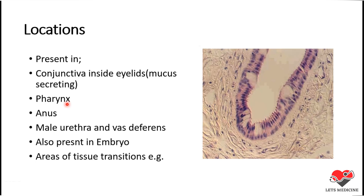One thing you must remember is that in the embryo, during the developmental years, the most common type of epithelium is stratified columnar epithelium. Also, stratified columnar epithelium is often present in areas of tissue transition — those areas where one kind of epithelium is changing to another type. Often this transition is between simple squamous epithelium and stratified cuboidal epithelium.